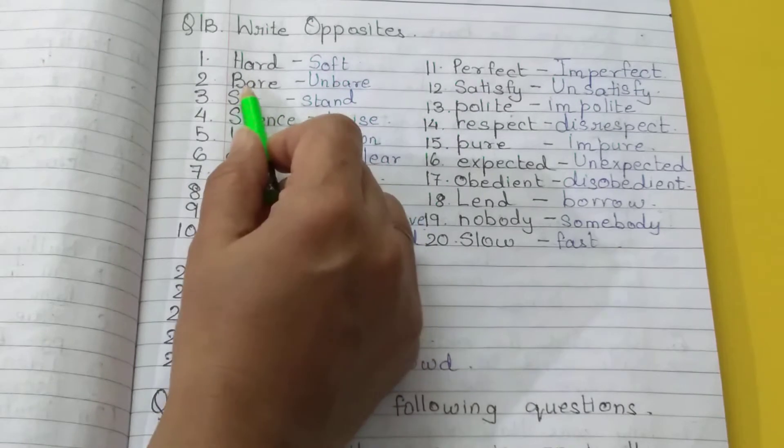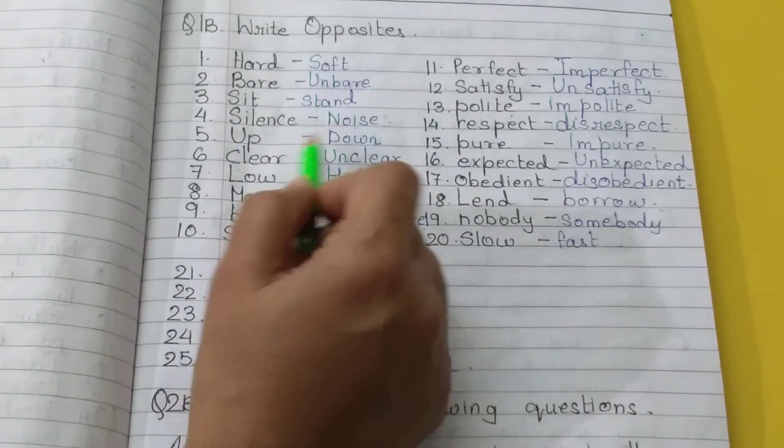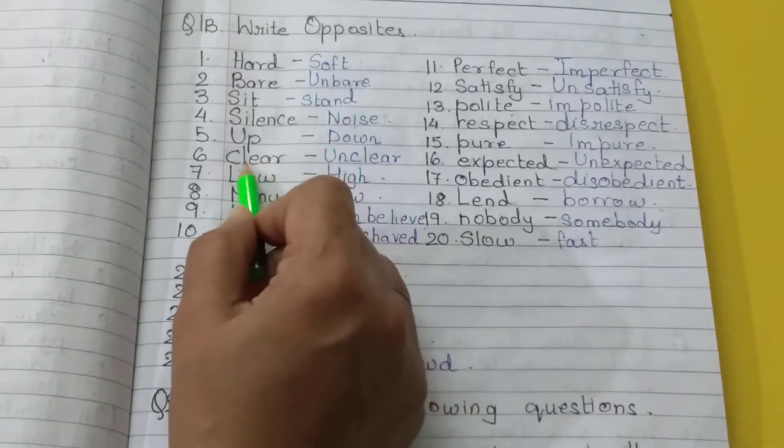Hard, soft. Bare, unbare. Sit, stand. Silence, noise. Up, down. Clear, unclear.